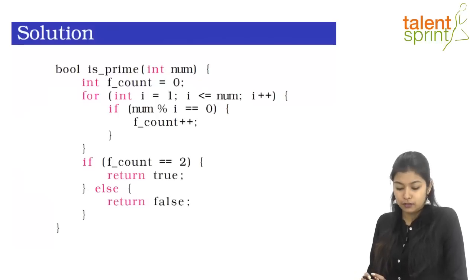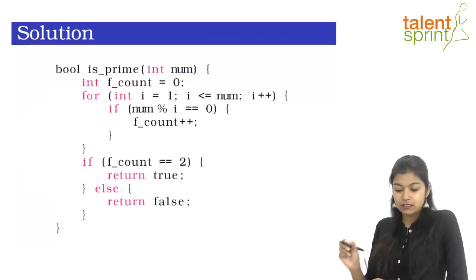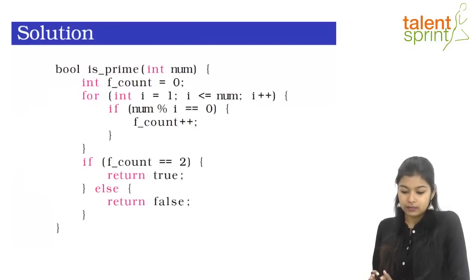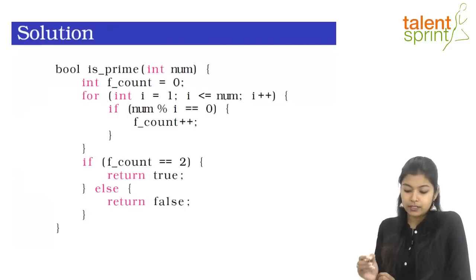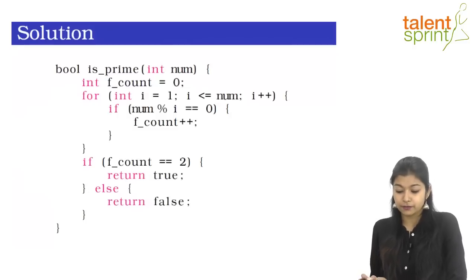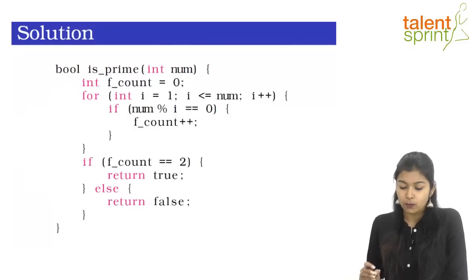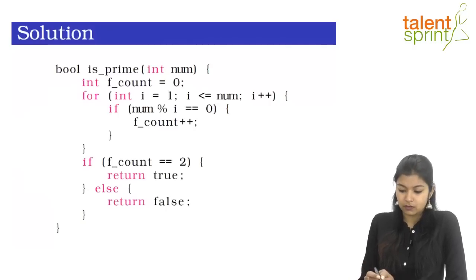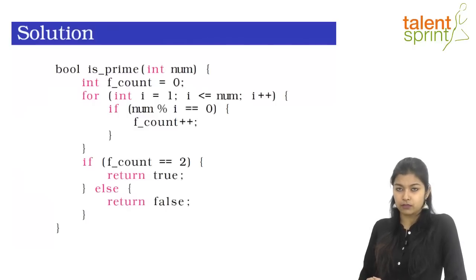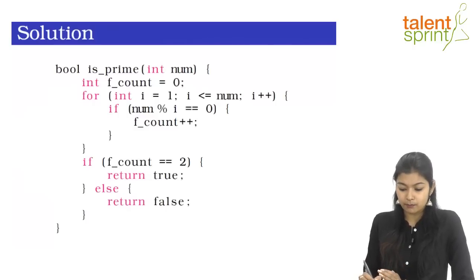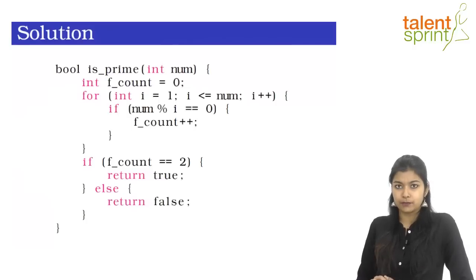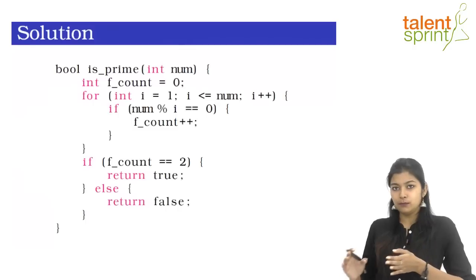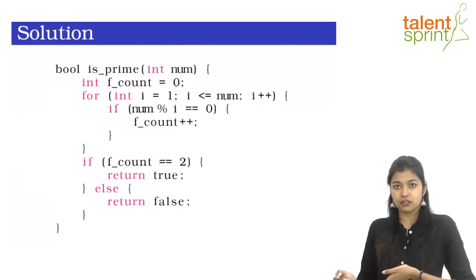We have created a for loop that iterates from 1 up to the number. In every iteration we divide our number by i to check if it is divisible. For example, in the first iteration the number is divisible by 1, so that condition is true and we add 1 to f_count. Similarly, in the final iteration when we reach num we add one more count, and along the way any other divisors also increment f_count.